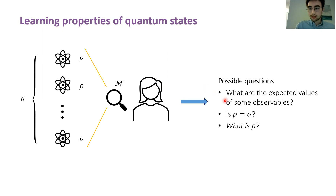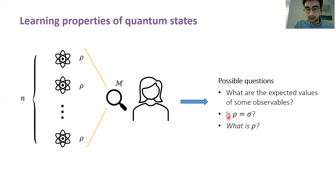For example, she might be interested in the expectation values of some set of observables. This is a question that shadow tomography tries to answer. Alternatively, maybe she's interested in determining whether a quantum device that she has, like a quantum computer, is functioning as expected. In this case, what she might want to do is ask whether rho is equal to some fixed state sigma.